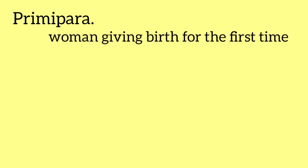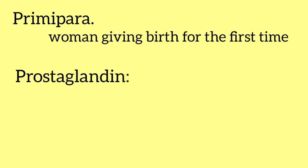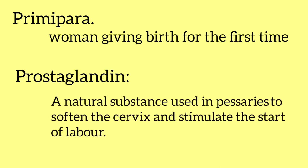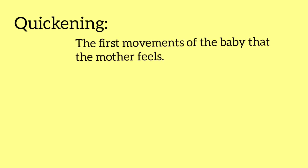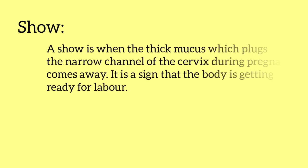Primipara means a woman giving birth for the first time. Prostaglandin is a natural substance used in pessaries to soften the cervix and stimulate the start of labor. Quickening is the first movement of the baby that the mother feels. Show is when the thick mucus which plugs the cervix during pregnancy comes away — it is a sign that the baby is getting ready for labor.